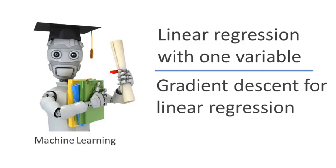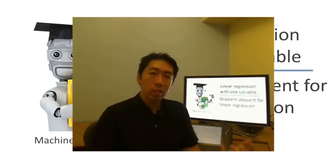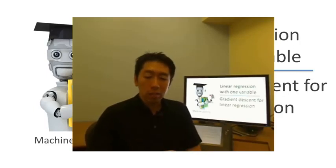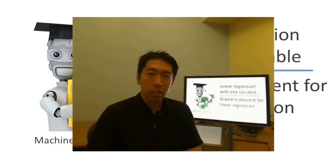In previous videos, we talked about the gradient descent algorithm, and we talked about the linear regression model and the squared error cost function. In this video, we're going to put together gradient descent with our cost function, and that will give us an algorithm for linear regression for fitting a straight line to our data.